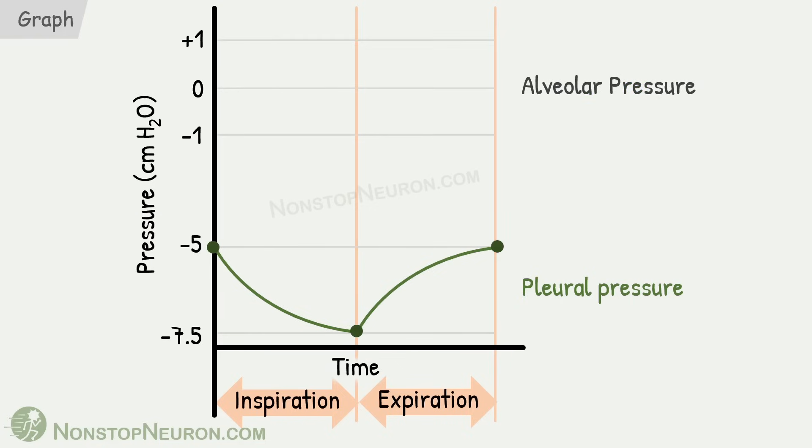Now, let's see alveolar pressure. At the beginning of inspiration, it's 0 cm of water. Expansion of lungs during inspiration decreases the pressure to about -1 cm of water. This results in suction of air from atmosphere till the pressure comes back to the level of 0 cm of water. Then during expiration, collapse of lungs increases the pressure to about +1 cm of water. This results in expulsion of air and pressure comes back to 0 cm of water again. The cycle keeps repeating.